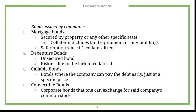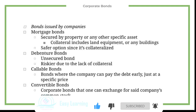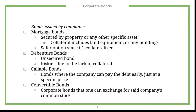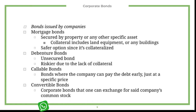The next kind is called corporate bonds — these are bonds issued by companies rather than governments. There are four different kinds. The first is called a mortgage bond, which is secured by property or another kind of asset; collateral includes but is not limited to land, equipment, or buildings. It's the safer of the two — mortgage versus debenture bonds — because it's collateralized.